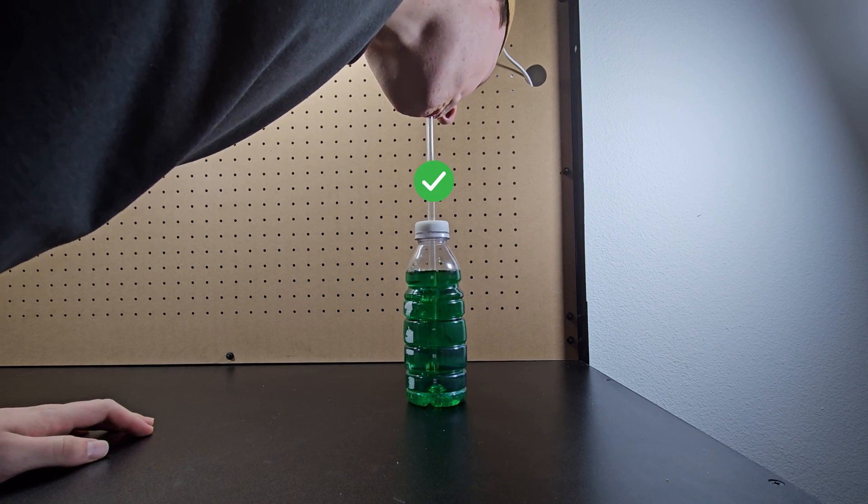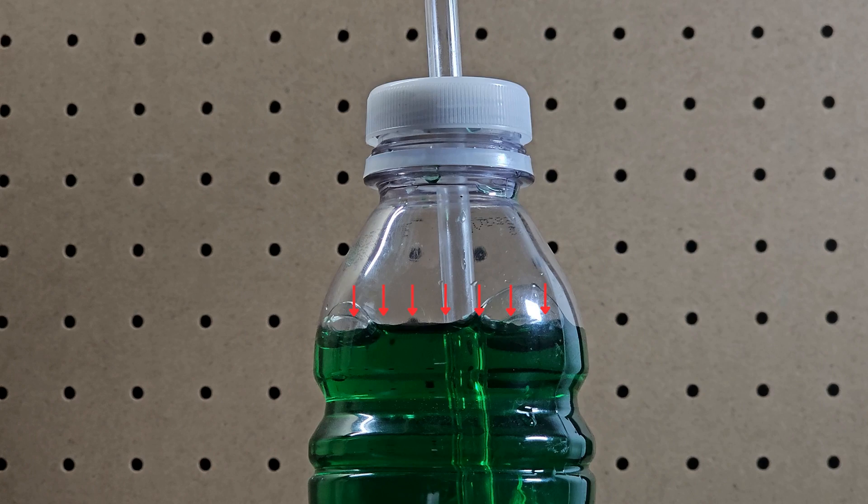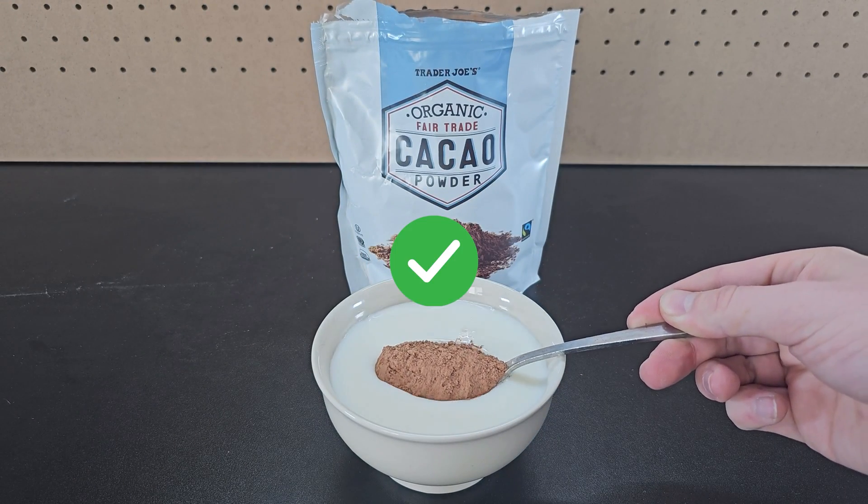Blowing into the straw does cause the water level to rise once you let go. Blowing air into the bottle increases the pressure inside the bottle, meaning when you take your lips off, water is forced up and out. If you thought this video was real, you'd be right.